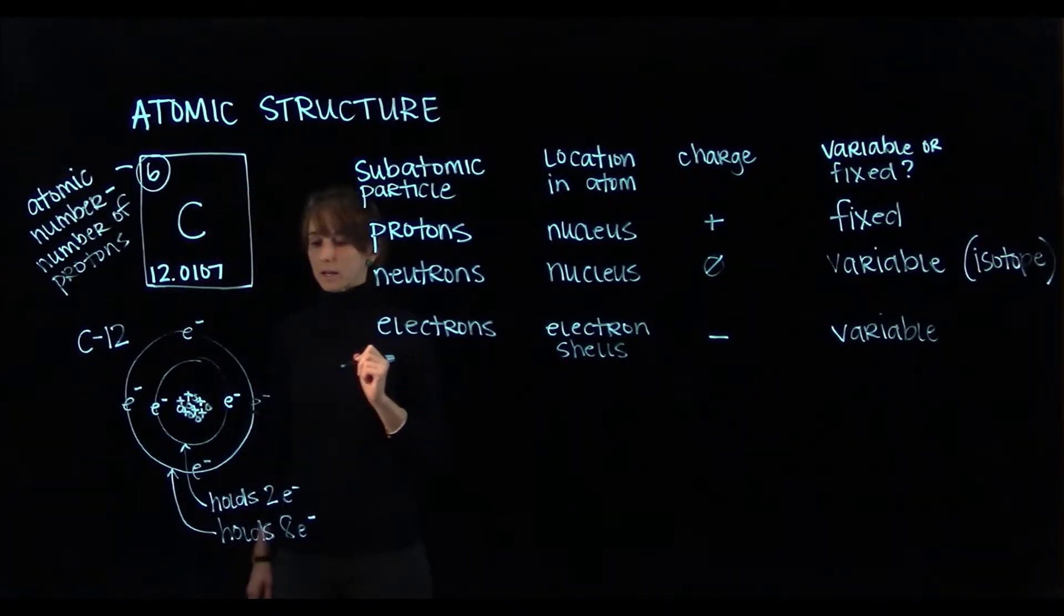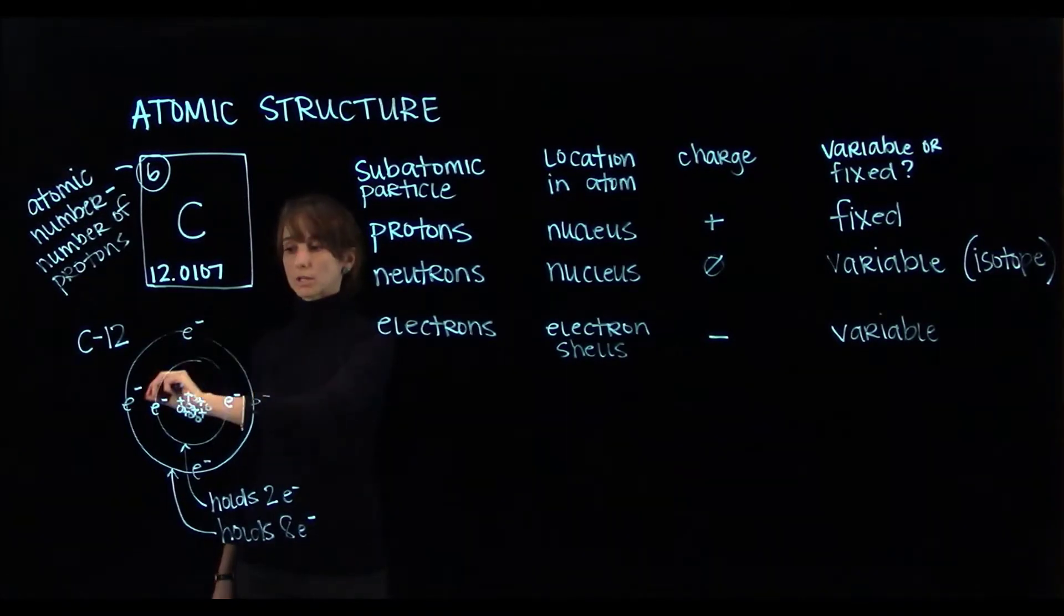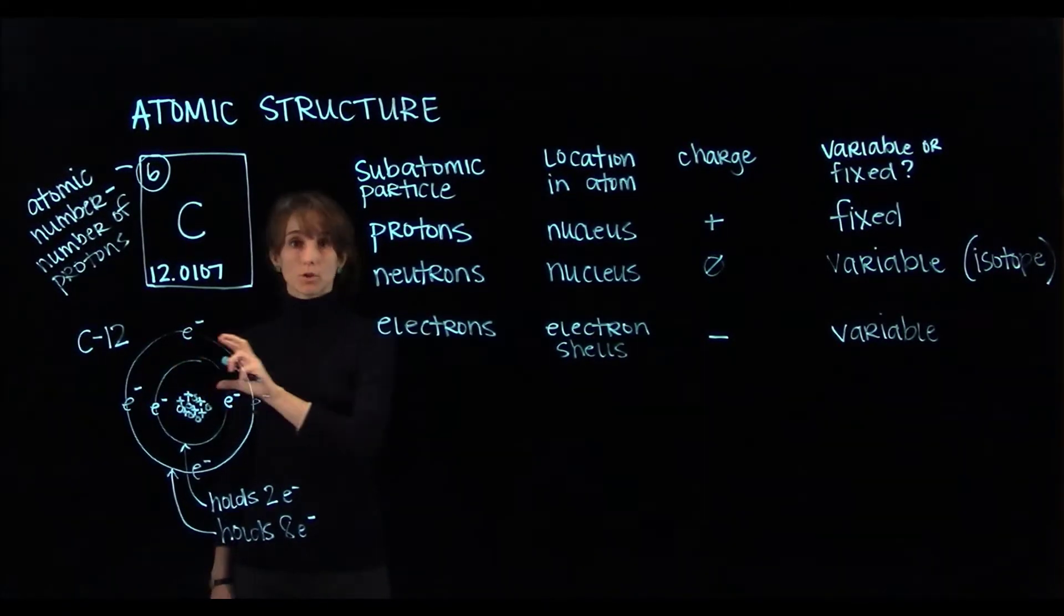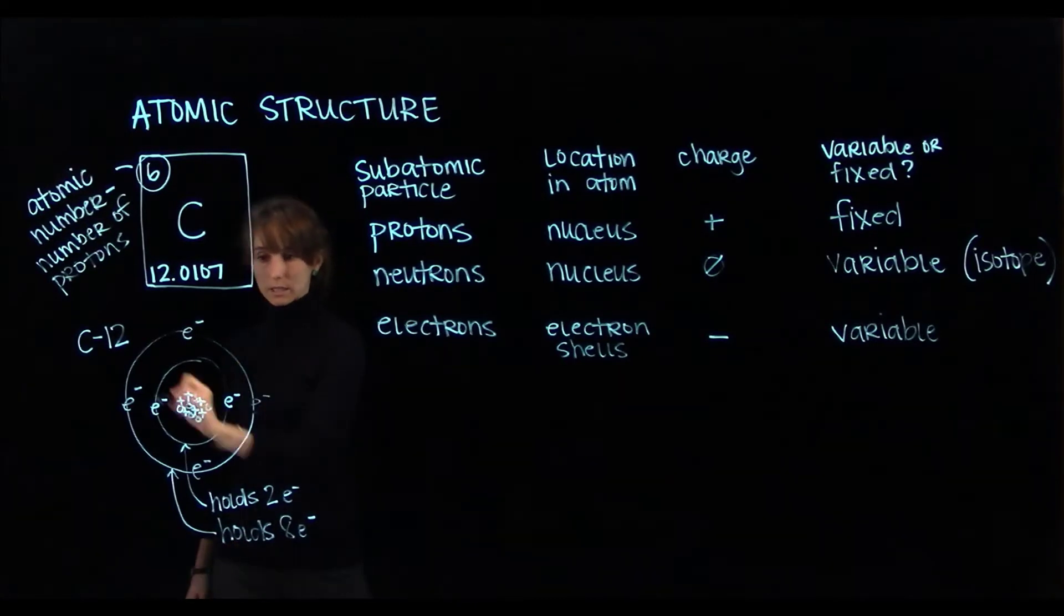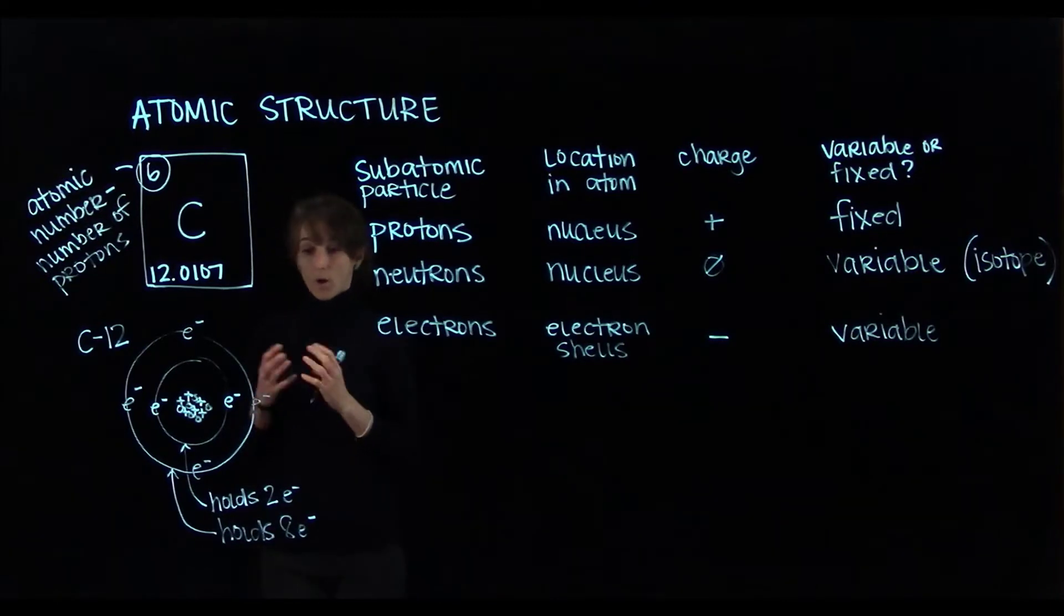It's important to keep in mind that even though it's convenient for us to draw electrons in fixed locations on electron shells, electrons are always in motion. So imagine these electrons are zooming around the nucleus. They're not just sitting in one place. That is our atom of carbon.